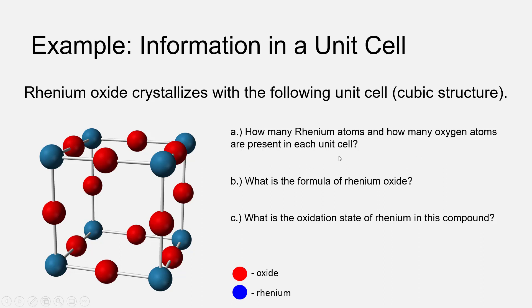We're asked three questions about the ionic compound based on the unit cell. First, how many Rhenium atoms and how many oxygen atoms are present in each unit cell? Second, what is the formula of Rhenium oxide? And lastly, what is the oxidation state of Rhenium in this compound?